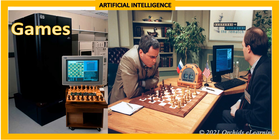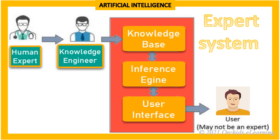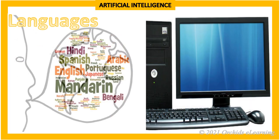Expert Systems: Computers are programmed to make decisions based on the information given. For example, based on symptoms, medical expert systems can diagnose a patient's illness. Languages: Computers can understand different human languages as they are spoken to them.